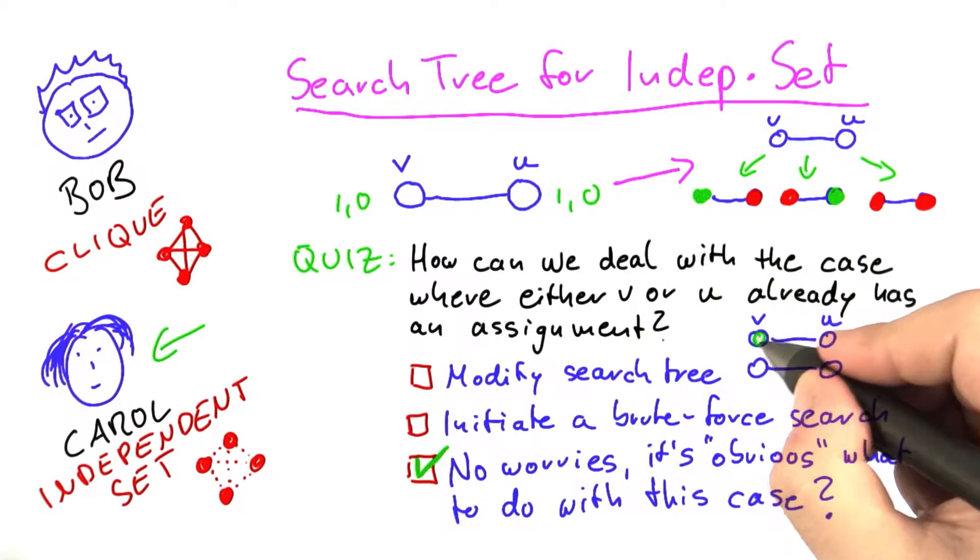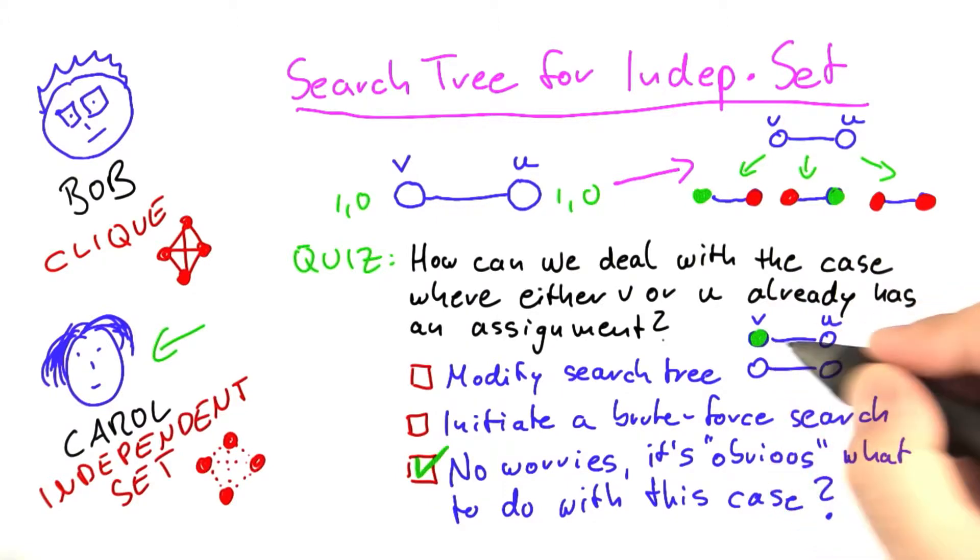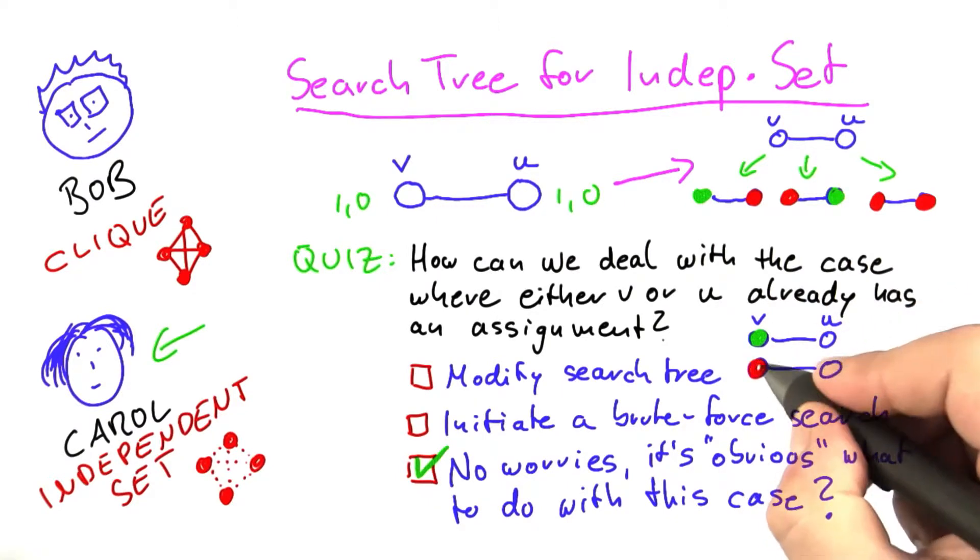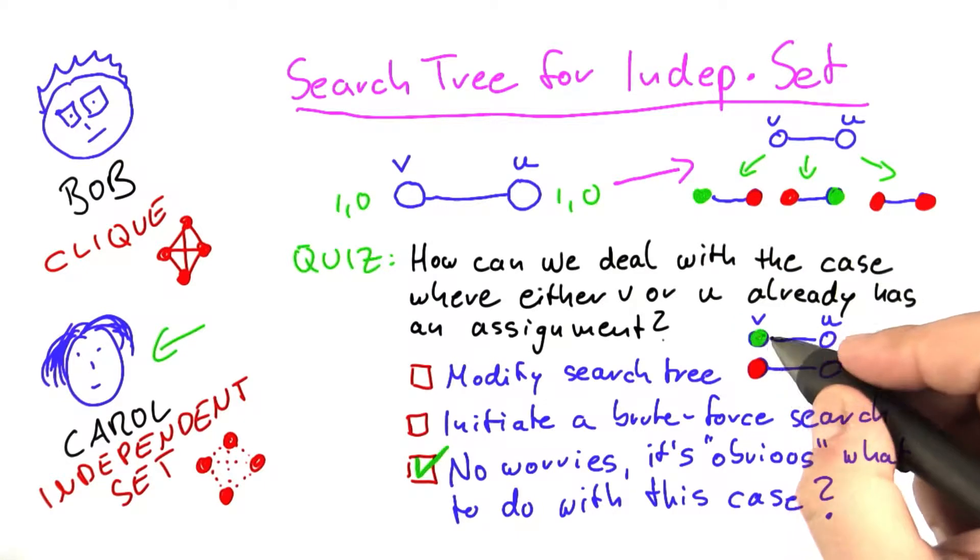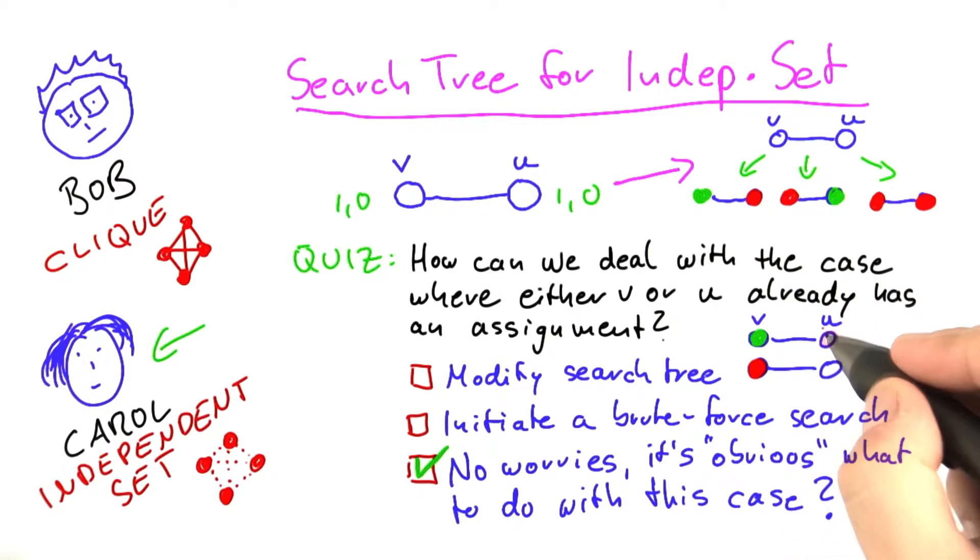There's two cases. Either we said yes, V is in the independent set, or we say no, V is not in the independent set. Now this case up here, that's very easy to see. Because if V is in the independent set and there's an edge here between those vertices, then U cannot be in the independent set. So that one's very clear.